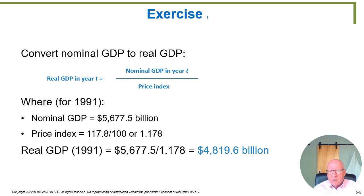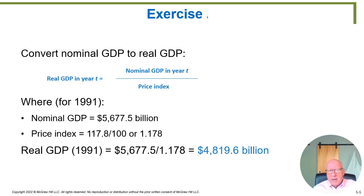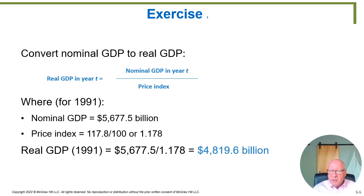So it turns out the economy did not grow as much as we thought it did. It didn't grow to $5 trillion in real terms — it only grew to $4.8 trillion in real terms if we used last year's prices as our measuring device. The whole purpose of this is that we can now fairly compare 1991 real GDP back to 1990, because now we're using the same prices to multiply times the number of goods. If we did that for every year, we can recalculate all nominal GDPs into real GDPs and make fair comparisons between years, even when inflation has taken place.